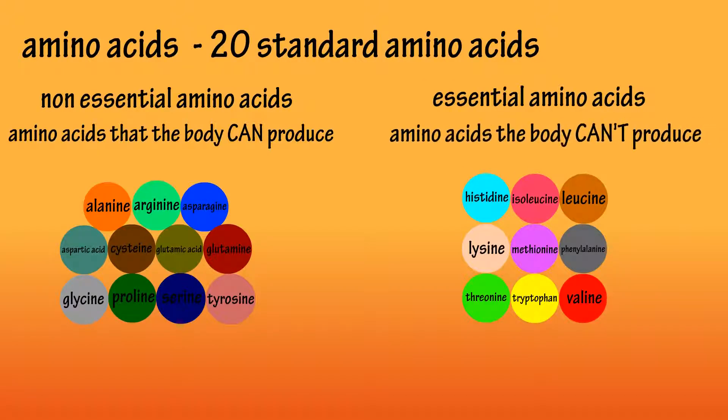Essential amino acids cannot be made by the body, so they must come from foods we eat. There are 9 essential amino acids.